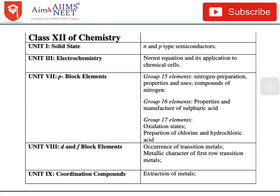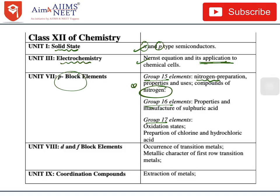In Class 12 Chemistry, Unit 1 — Solid State, which is a nightmare for many students — N and P semiconductors have been deleted from the syllabus. From Unit 3 — Electrochemistry — the Nernst equation and its applications to chemical cells has been deleted. In Unit 7 — P Block Elements — Group 15: nitrogen preparation, properties, uses, and compounds of nitrogen are also deleted.